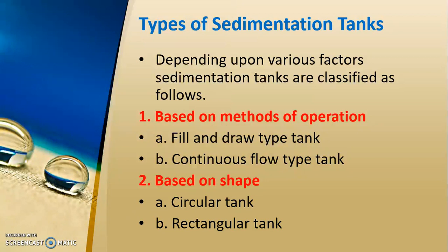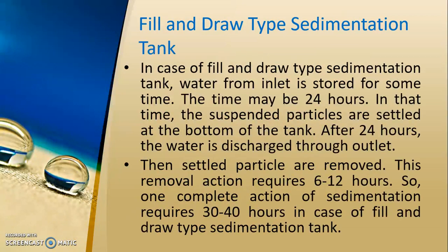Sedimentation tanks are of different types. Based on the method of operation, there is the fill-and-draw type and the continuous flow type. Based on shape, there are circular and rectangular tanks. In the fill-and-draw type, water is stored in the tank for a detention period — typically 24 hours — during which suspended particles settle at the bottom, then water is discharged through the outlet. However, since this type requires many tanks, which is not feasible for a water treatment plant, it is not commonly used.